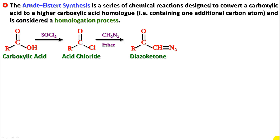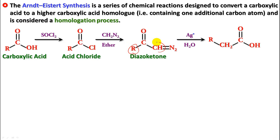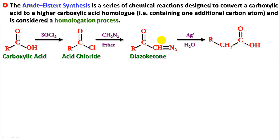The diazo ketone undergoes hydrolysis in the presence of Ag⁺ to produce the next carboxylic acid, RCH₂COOH — the next higher homolog. What we need to understand is that R is attached to this carbon. In the product, you can see that R is attached to this carbon and there is an OH attached to the C double bond O, and you get a higher carboxylic acid.